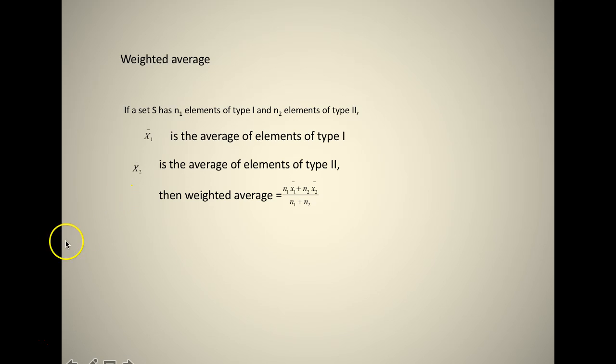Coming to weighted average, if a set S has n1 elements of type 1 and n2 elements of type 2, x1 bar is the average of elements of type 1, x2 bar is the average of elements of type 2, then weighted average is n1x1 bar plus n2x2 bar divided by n1 plus n2.